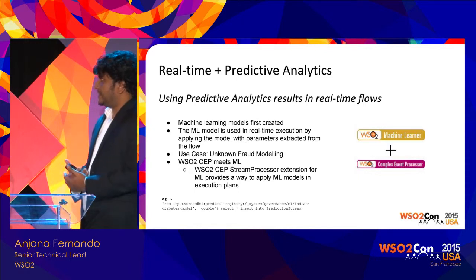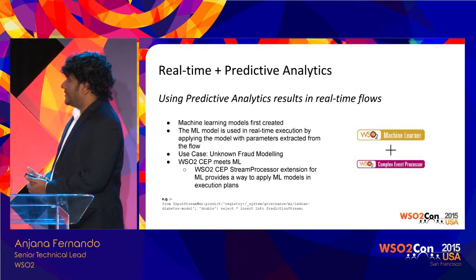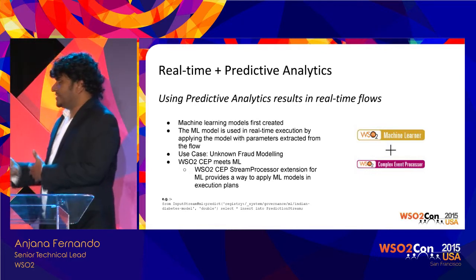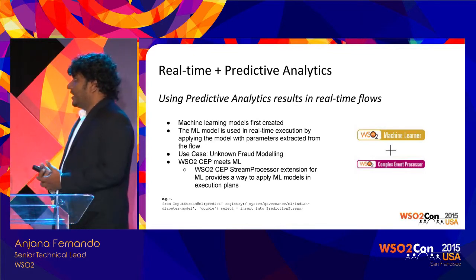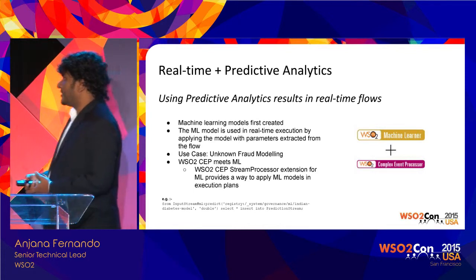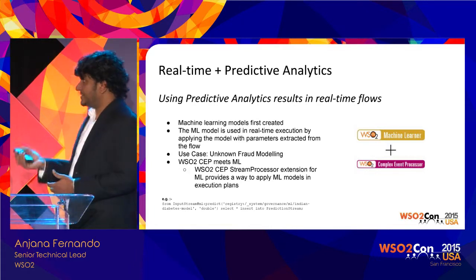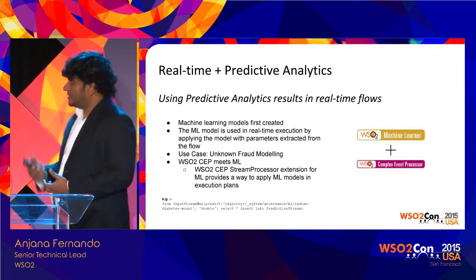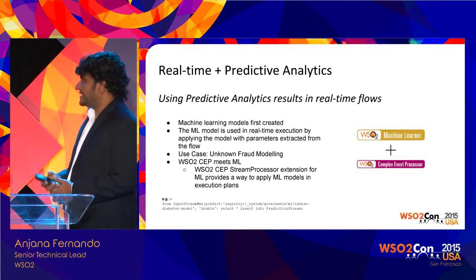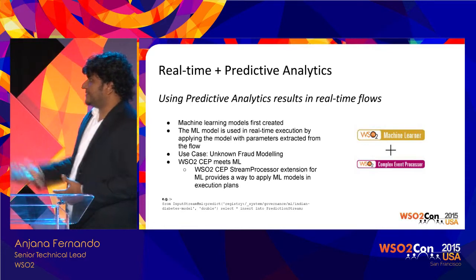The other obvious scenario is real-time plus predictive analytics. Real-time flows can look up machine learning models in their flows and apply event properties as parameters to the model to get results, and continue with that in the real-time flow. For example, a use case would be unknown fraud modeling — scenarios where I don't have specific rules already written for fraud detection. You can use the ML integration with CEP to identify fraudulent activities. In CEP, the extension used here is called a streaming processor extension — you give the ML model and do the processing.